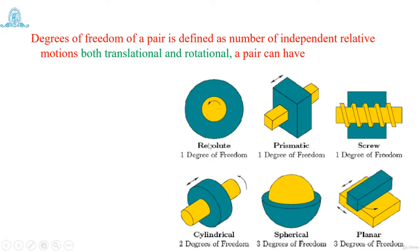In the case of a revolute pair, there is only one degree of freedom — rotational about the axis of the shaft. In this prismatic case, there is only one translation motion but along the axis of the shaft.